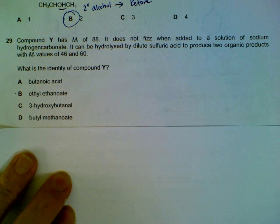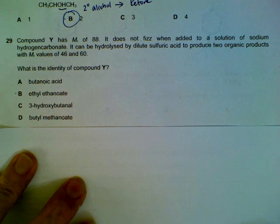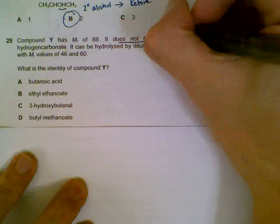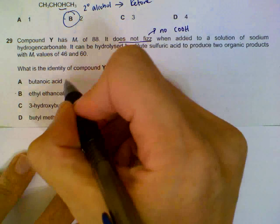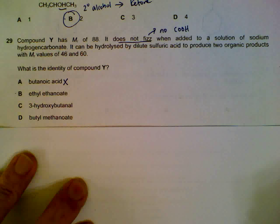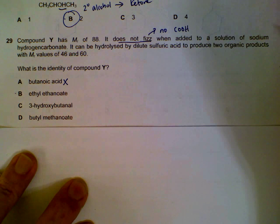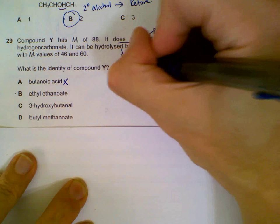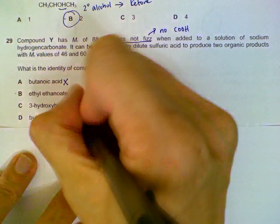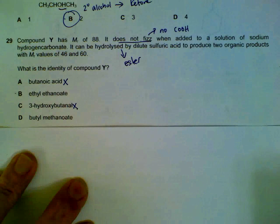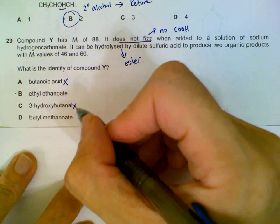Compound Y does not effervesce when added to sodium hydrogen carbonate solution — in other words it is not an acid and has no COOH group, so we eliminate option A. It can be hydrolyzed by dilute sulfuric acid to produce two products, suggesting it is an ester, so we eliminate C which is not an ester. We are left between B and D.